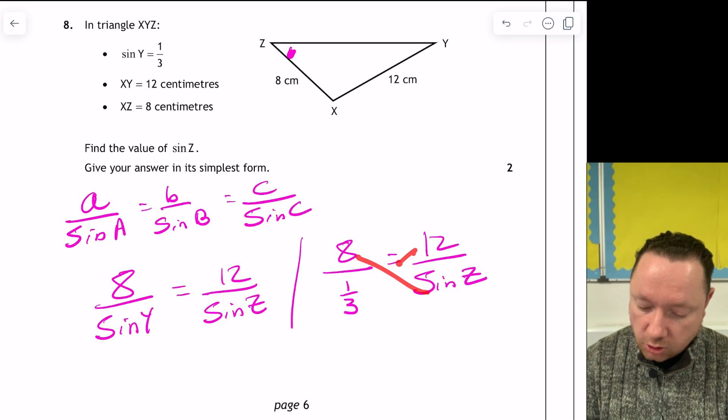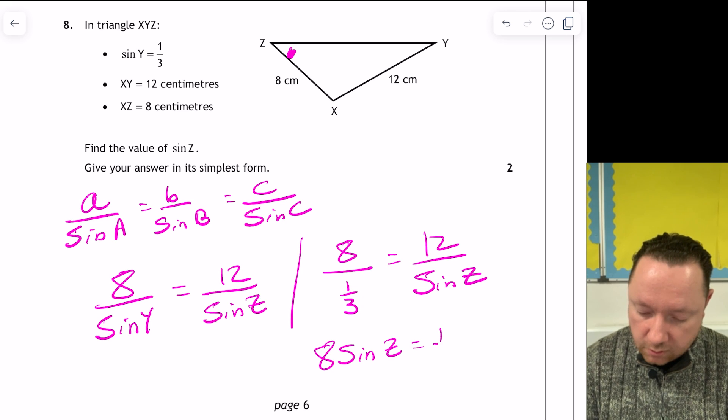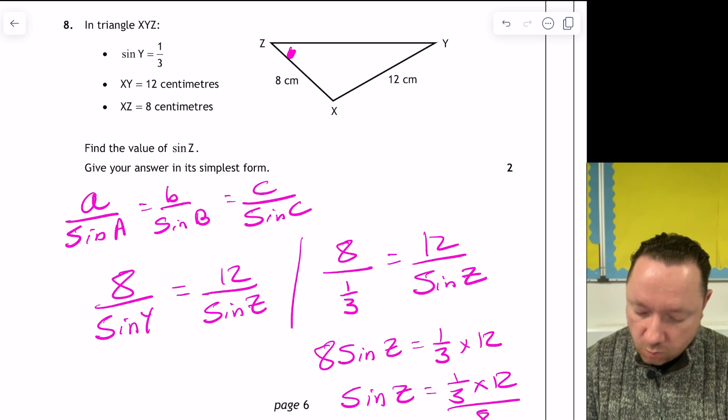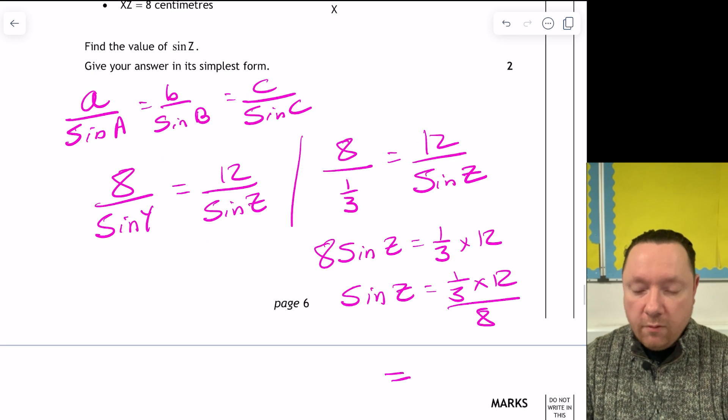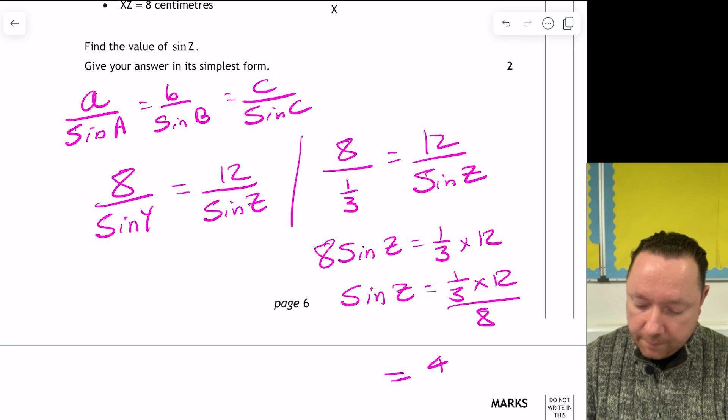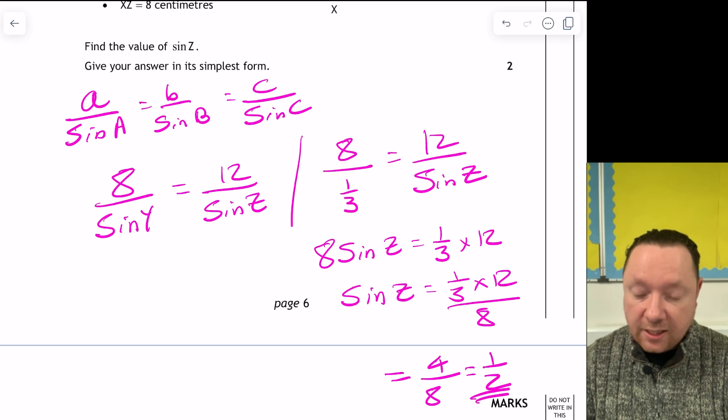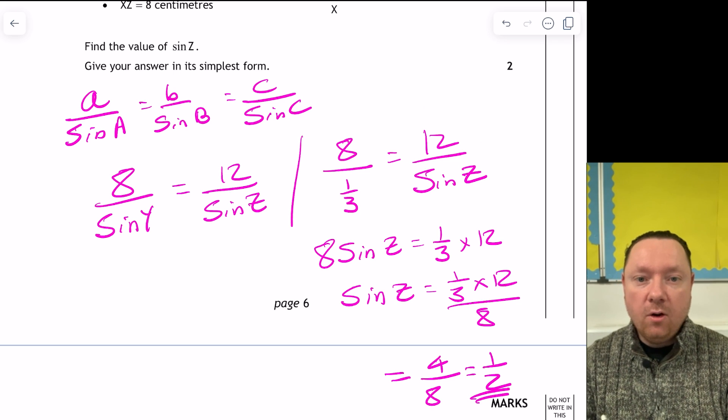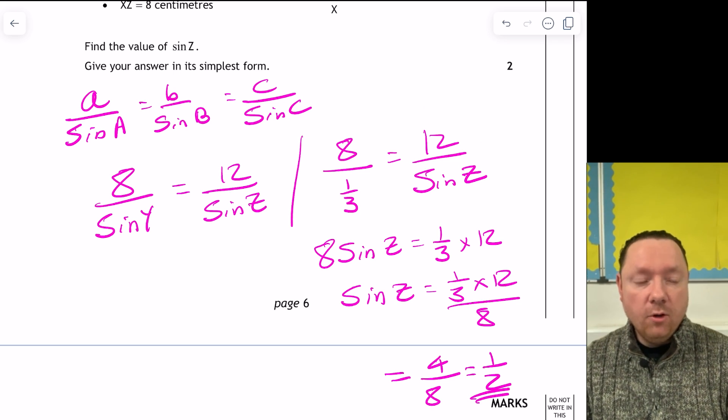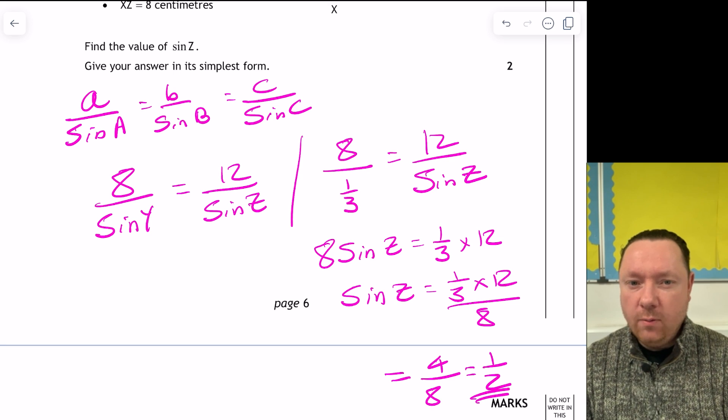Now, there's lots of ways to deal with this. You could do 8 divided by a third if you want. Or you can just make it the subject, sine z, which that'll do, because you just do cross cross. So I've got 8 sine z equals a third of 12. So that means that sine z is a third of 12 divided by 8. And we can just work that out. A third of 12 is 4. So that's 4 over 8, which equals a half. And now we're done. Sine z is a half. You can't work out z because that would be an exact value.